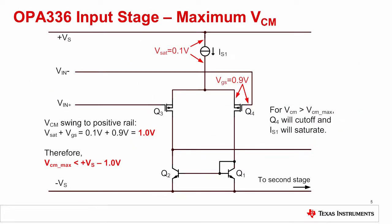Let's consider the input swing to the positive rail for the OPA336, a typical MOSFET device. This example schematic is a simplified version of the actual device schematic, but it is representative of the types of issues that limit common mode range. In this example, the maximum voltage on an input pin can be calculated by performing a Kirchhoff's voltage walk from either input pin to the positive supply.